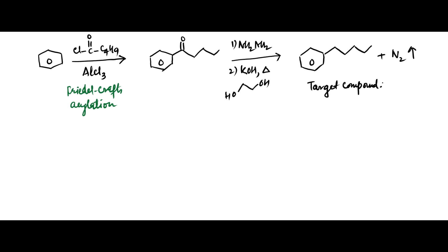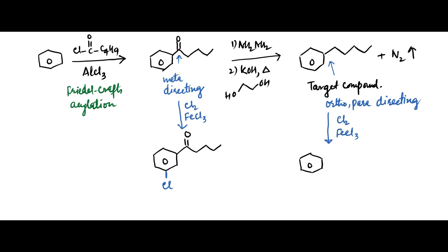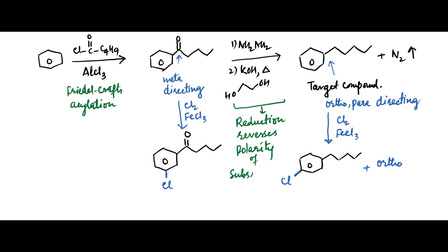Another application is reversal of polarity of a group on an aromatic ring. A carbonyl group is meta-directing, so chlorination in the presence of FeCl3 gives the meta-chlorinated product. Whereas the alkyl group obtained after Wolf-Kishner reduction is ortho-para-directing, so chlorination in the presence of FeCl3 gives the para- and ortho-chlorinated products. Thus reduction reverses the polarity of the substituent attached to the benzene ring.